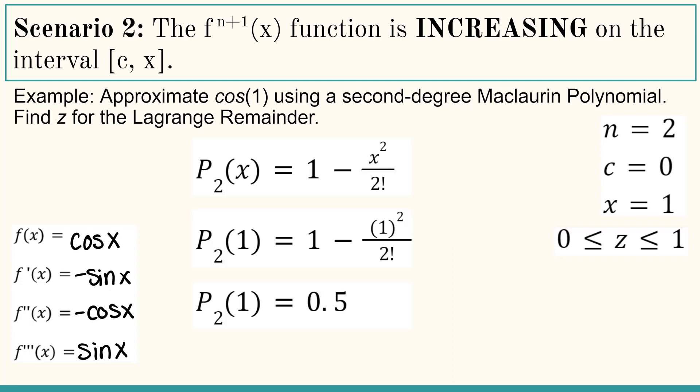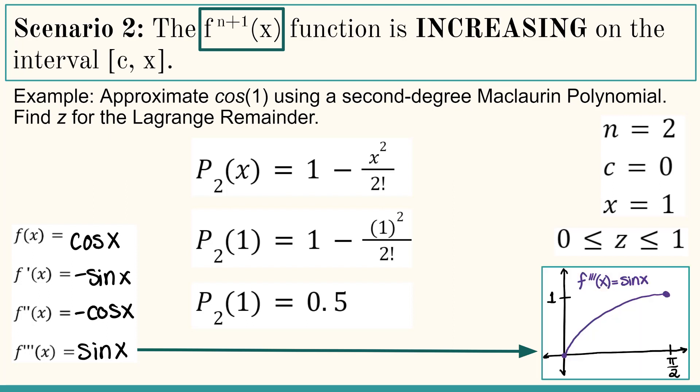So what z value would we choose to get a maximum y value in order to create the most accurate error bound? We're going to use the n plus 1st derivative, and that would be our third derivative, which is sine x. What does sine x look like on our interval 0 to 1? Sine x is an increasing function from 0 to pi halves. Pi halves is about 1.7, so our maximum value is about here at x equals 1.